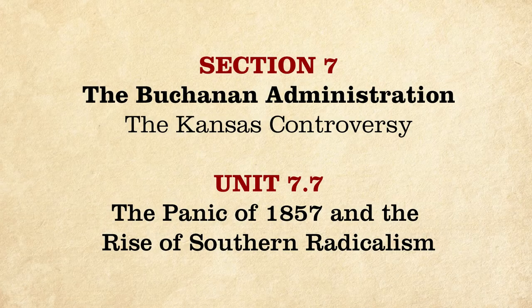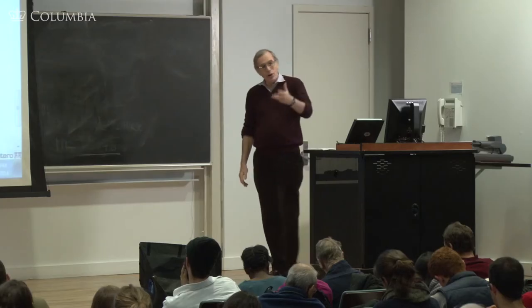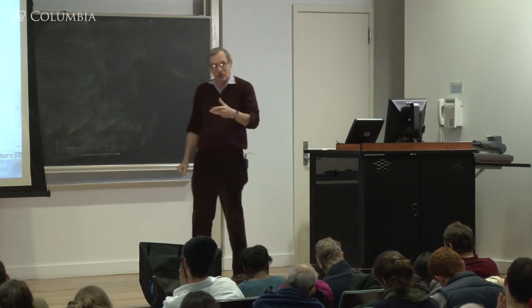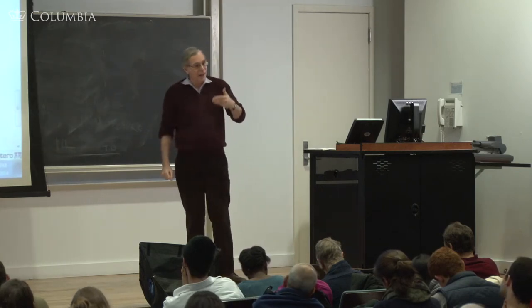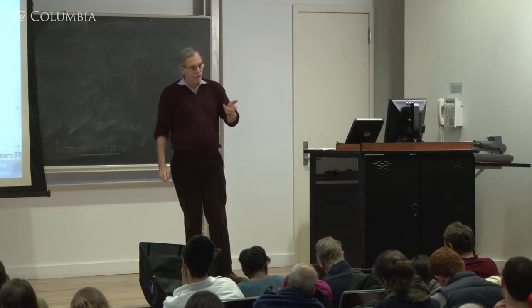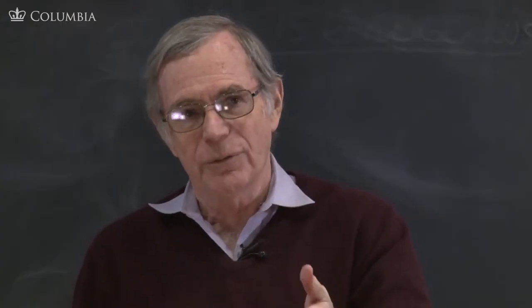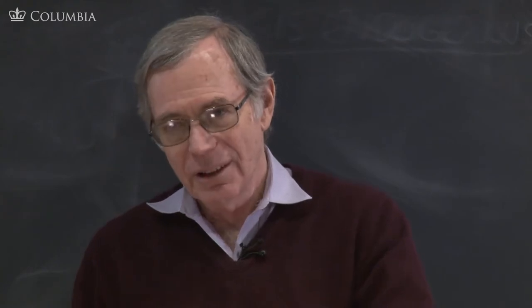As if poor Buchanan didn't have enough problems, in the fall of 1857 there begins a serious economic downturn, the so-called Panic of 1857.